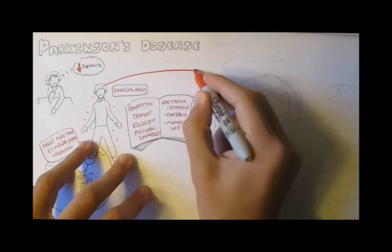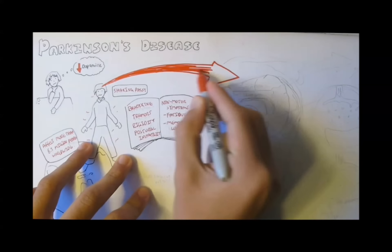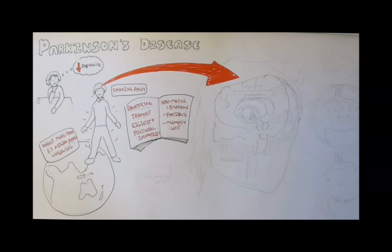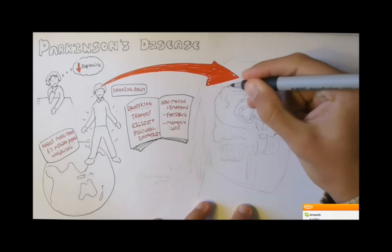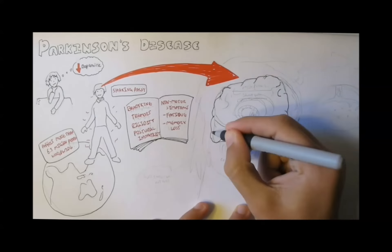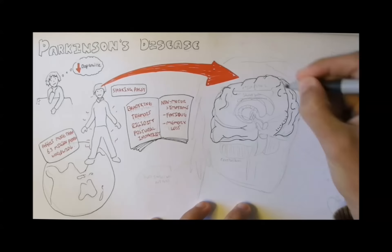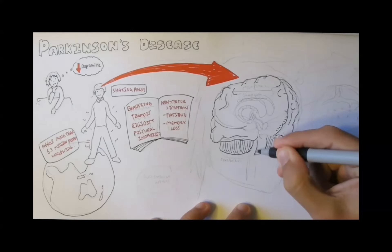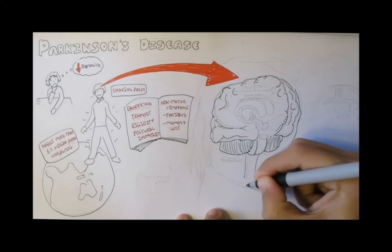To understand the pathophysiology of Parkinson's, we must look inside the brain. The brain looks something like this in this angle. We will leave the middle blank to visually see the inner part of the brain. The midbrain, also known as the mesencephalon,